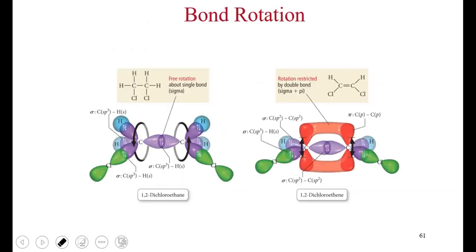One important consequence of double bonds is that they restrict rotation. Compare 1,2-dichloroethane — which has a single carbon-carbon bond — to 1,2-dichloroethene — which has a double bond. The presence of the double bond restricts rotation around that carbon-carbon axis, which has significant consequences for the structure of the molecule.